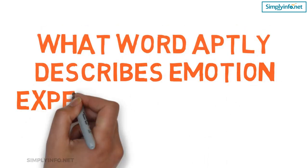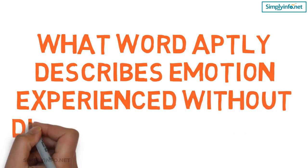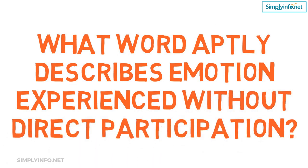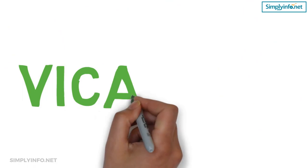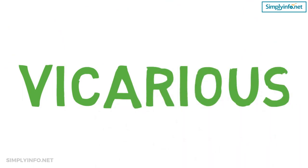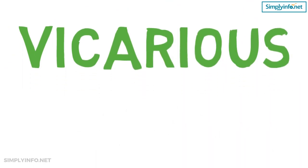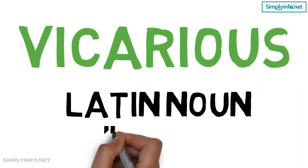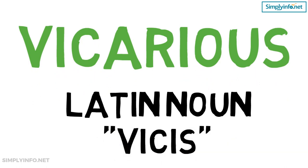What word aptly describes an emotion experienced without direct participation? Vicarious. You can experience an emotion in two ways: first, through actual participation, or vicariously, by becoming empathically involved in another person's feelings. Vicarious is derived from the Latin noun 'vicarius,' which means change, alternation, or state.